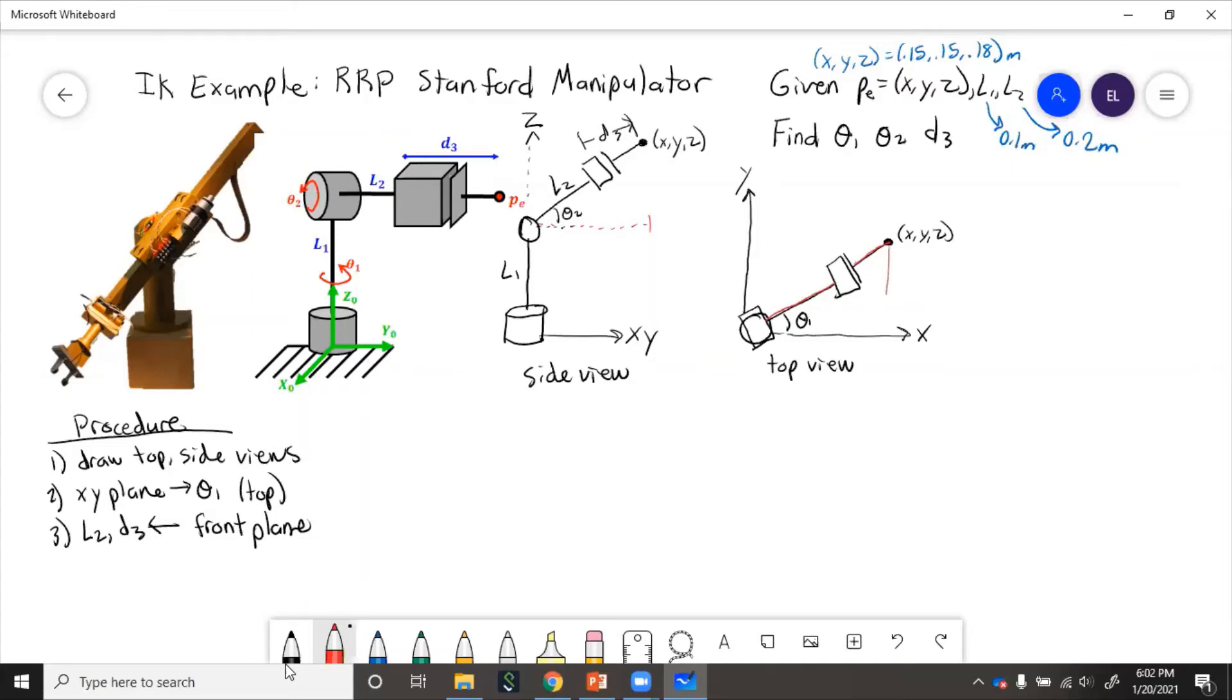To get theta1, we can just use the y and the x. If we put numbers in there, that is just going to be 0.15 over 0.15, which equals 45 degrees, equals pi over 4.